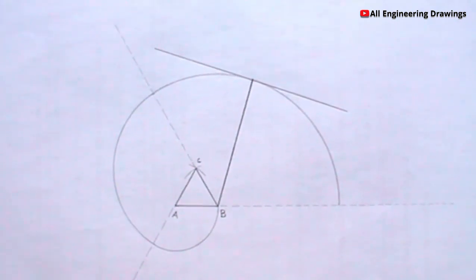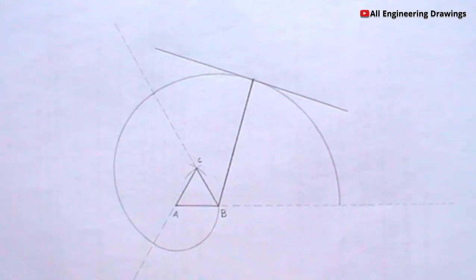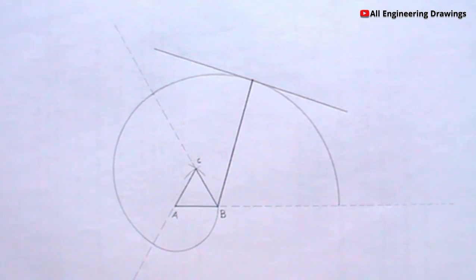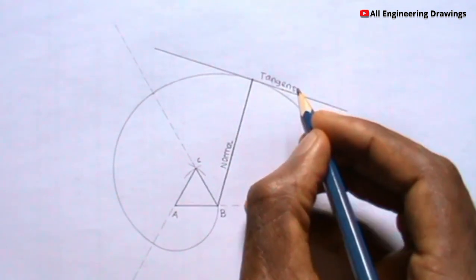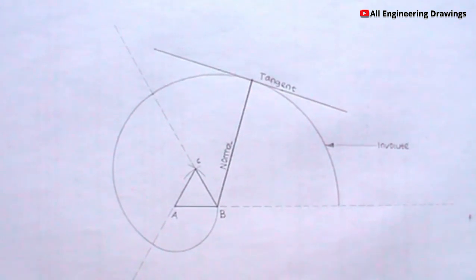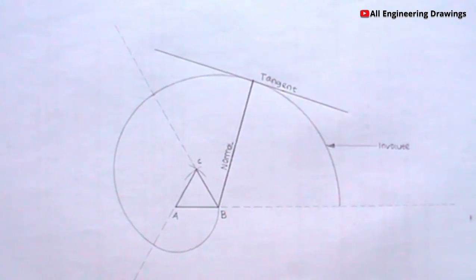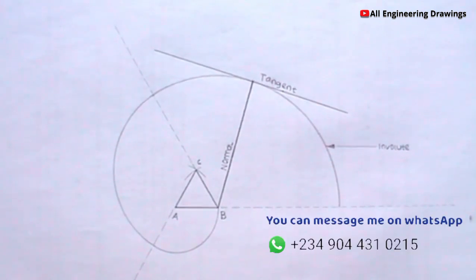We have our involute, our normal, and our tangent, so we can just label the drawing. If you have any questions on engineering and technical drawing in general, you can message me on WhatsApp — the number displayed on the screen is my WhatsApp number.